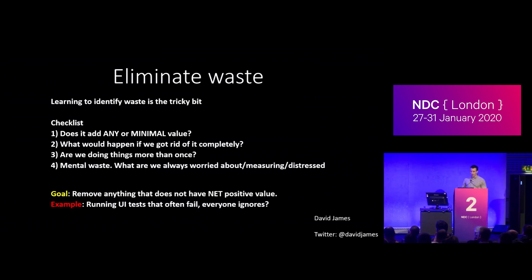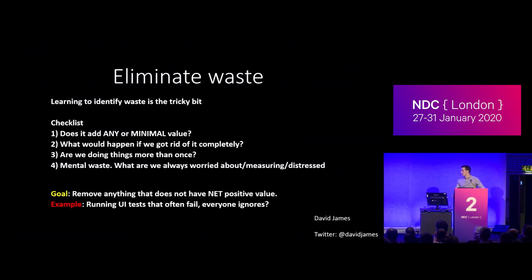Would the world end? Are we doing things more than once? A big form of waste is repetition. Often in processes, repetition can be hidden, so it's important to get everything you do out into the open to find if you're doing things more than once. Probably the one that affects people the most and is least identified is mental waste — things that we're worried about, measuring all the time, analysing, or that give us a sense of distress. What can we do to remove that completely or placate those feelings? The goal is to remove anything that doesn't have a net positive value.